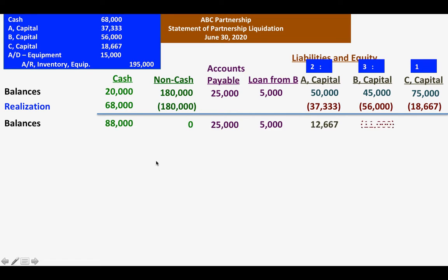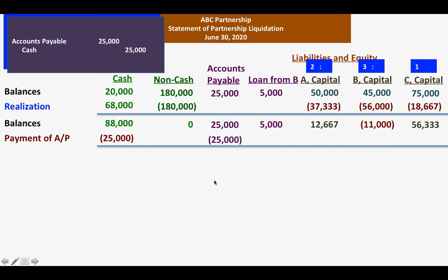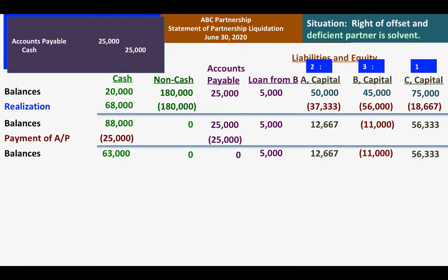We get the balances. After the distribution of the loss from the sale of non-cash assets, we pay our liabilities. We have no liquidation expenses, so we go ahead and pay accounts payable by debiting accounts payable and crediting cash. After getting the new balances, the next step is to apply the right of offset. We can see from the capital structure that partner B is deficient — he has a deficit of 11,000. The partnership has a loan from B, so we can apply the right of offset.